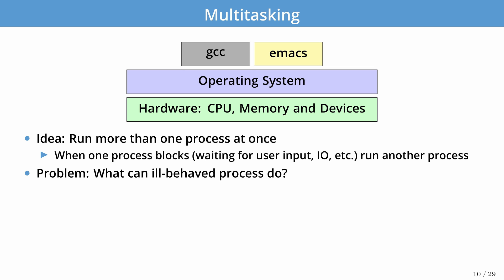The next type of operating system implements some form of multitasking — we want to be able to run more than one program at once. Here in this diagram you can see that GCC and Emacs are both running on our OS. When one program is blocked — for example, Emacs is waiting for user input — GCC could run in the background doing compilation.